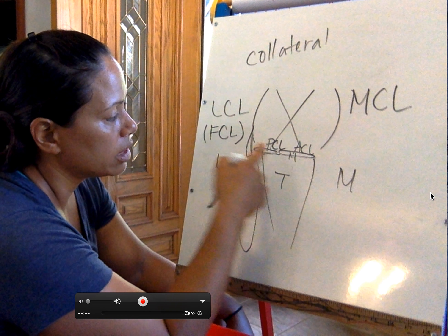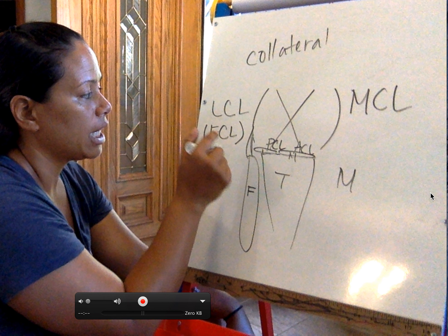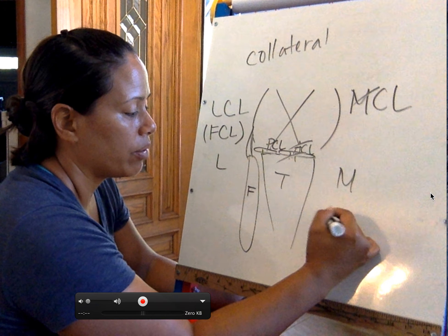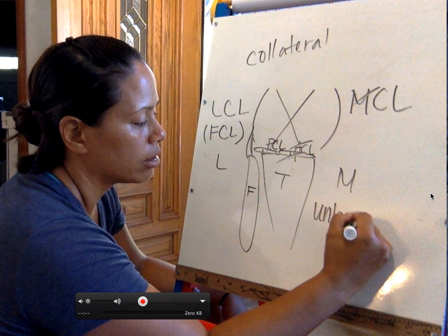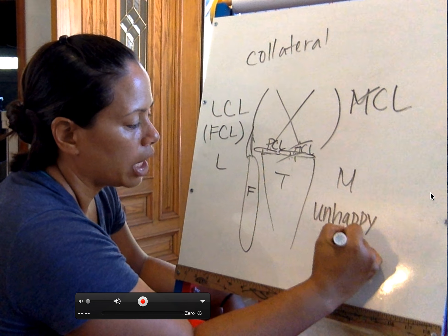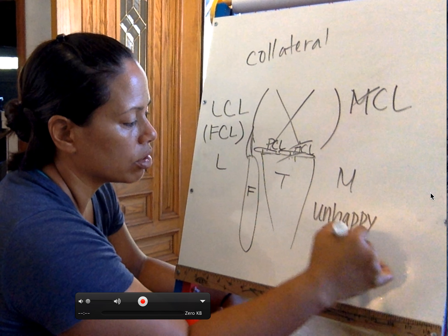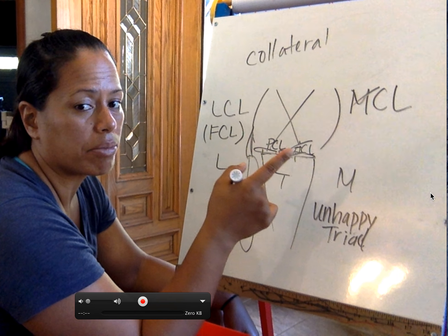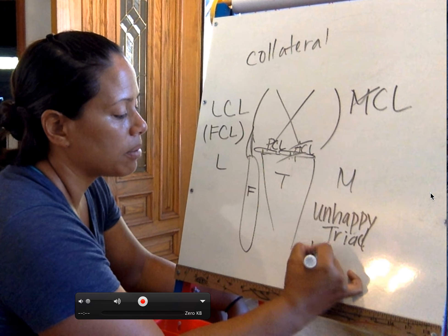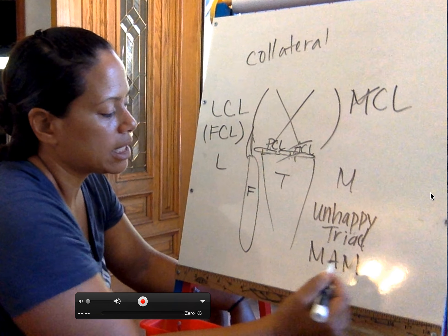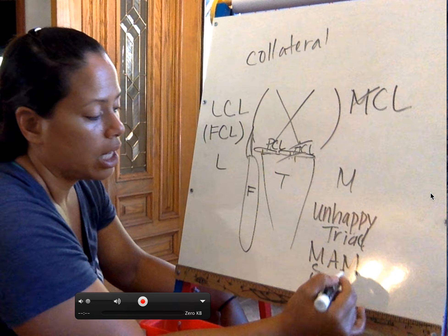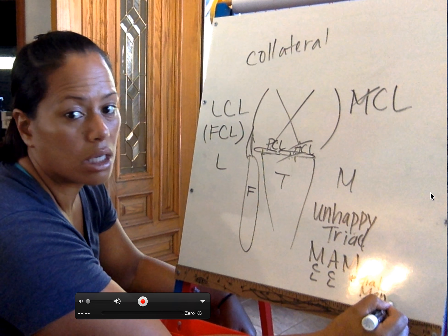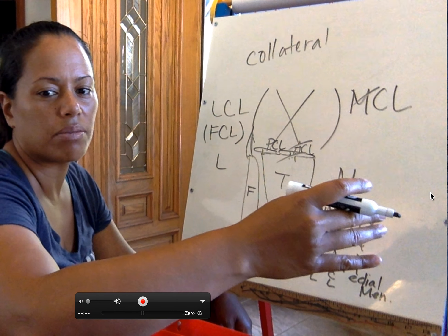If I hit somebody from behind, I can tear through the medial meniscus, ACL, and MCL — that we call an unhappy triad. It occurs when three things are damaged as a result of an injury, more specifically from clipping, getting hit from behind. The triad is just MAM: MCL, ACL, and medial meniscus.